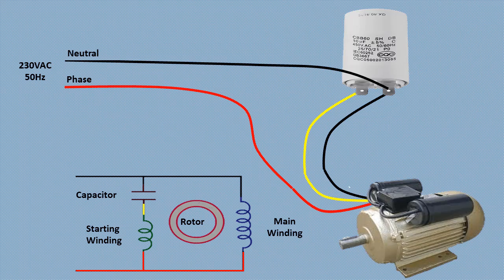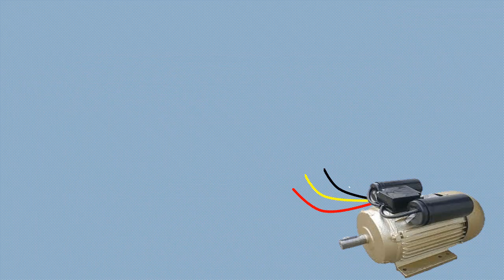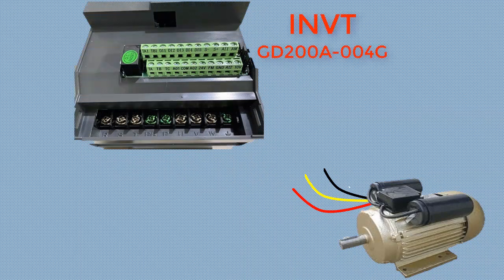To run a single phase motor with a VFD first, remove the capacitor. This will leave you with three wires from the motor. Connect these three wires to the output terminals of the VFD as shown.